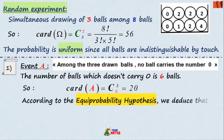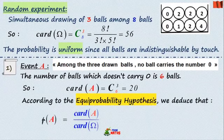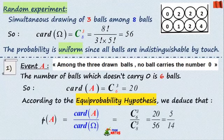The probability of A becomes easy through the equiprobability hypothesis formula: P(A) equals cardinality of A over cardinality of omega.